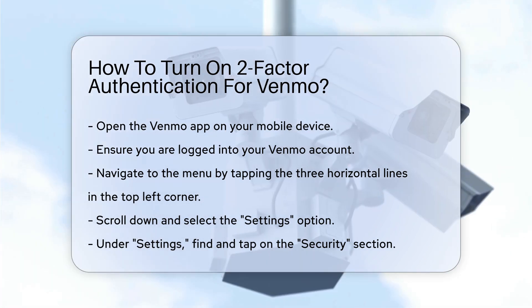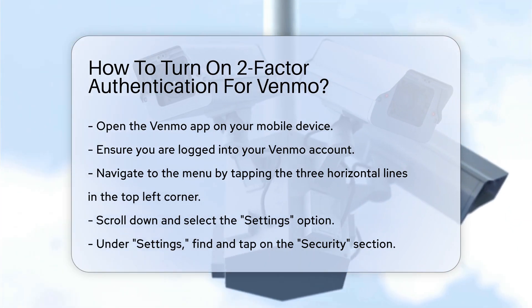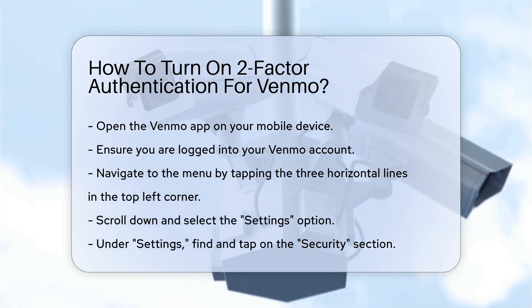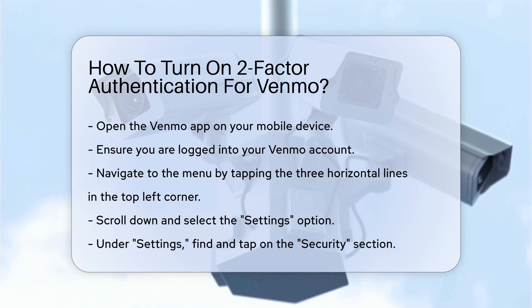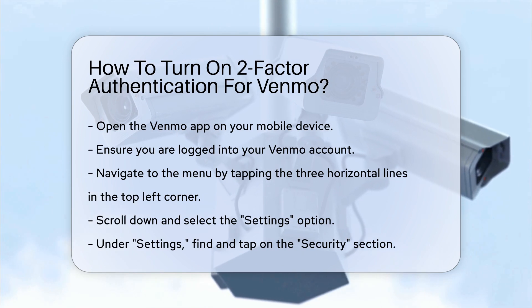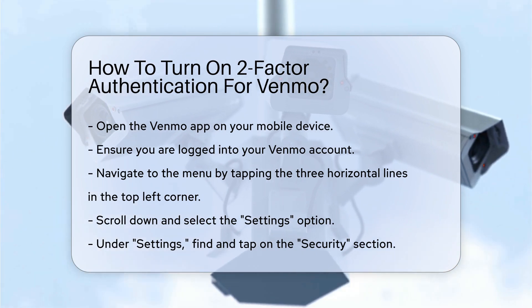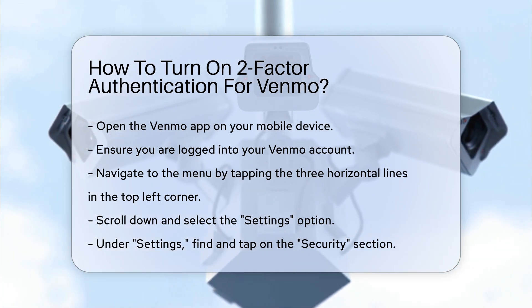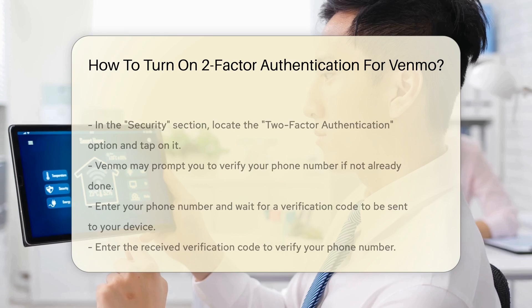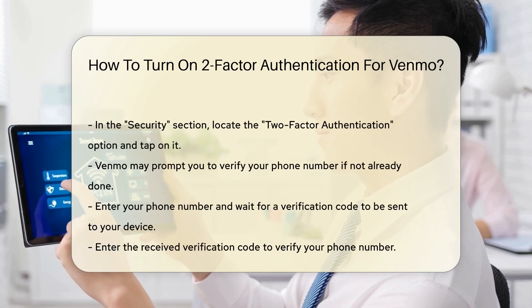This will open the main menu. Next, scroll down and select the Settings option. Under the Settings menu, look for the Security section. Tap on Security to access security-related settings for your Venmo account.